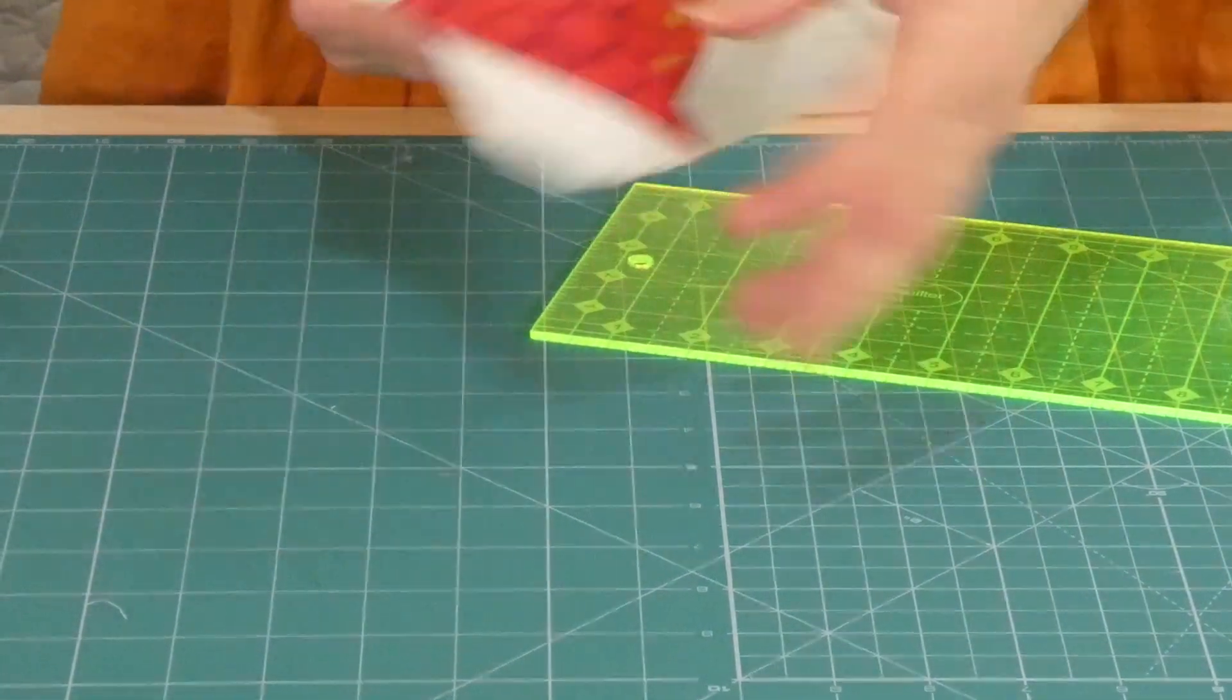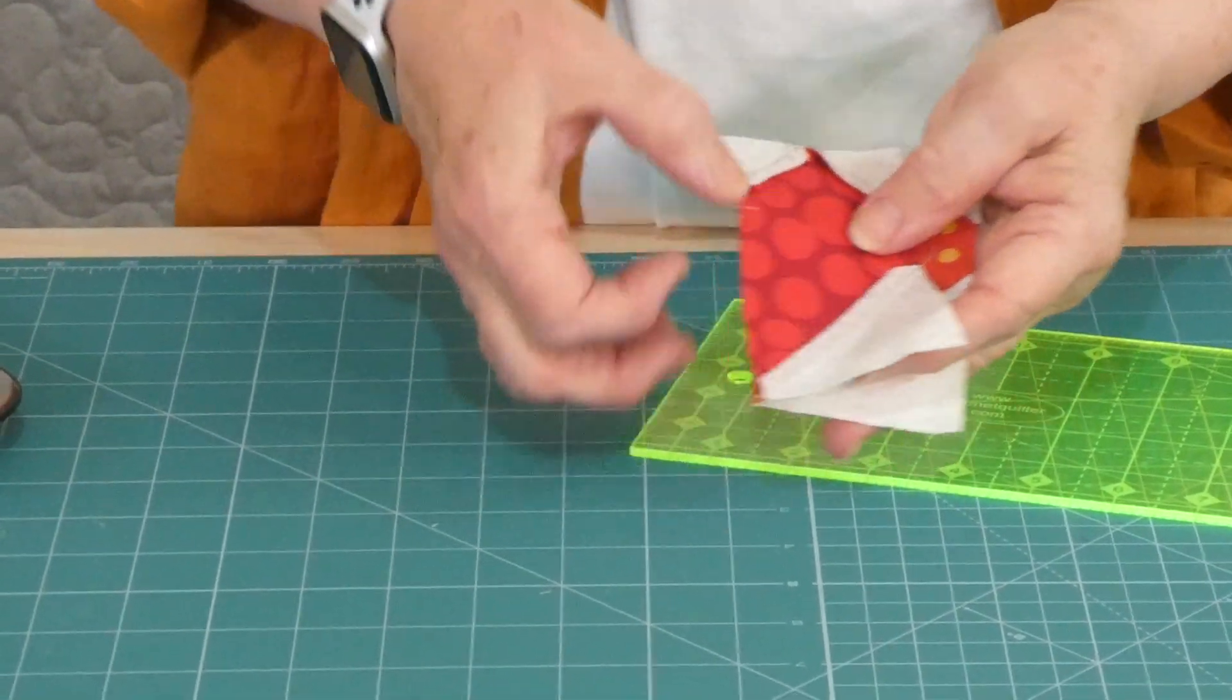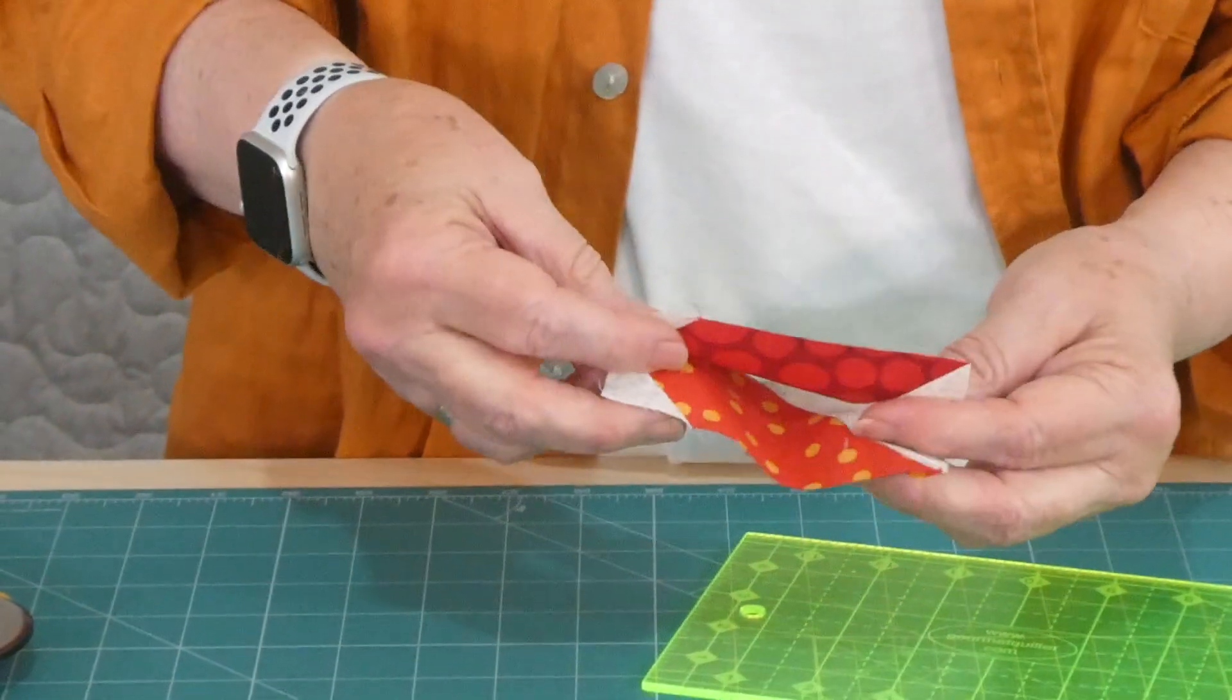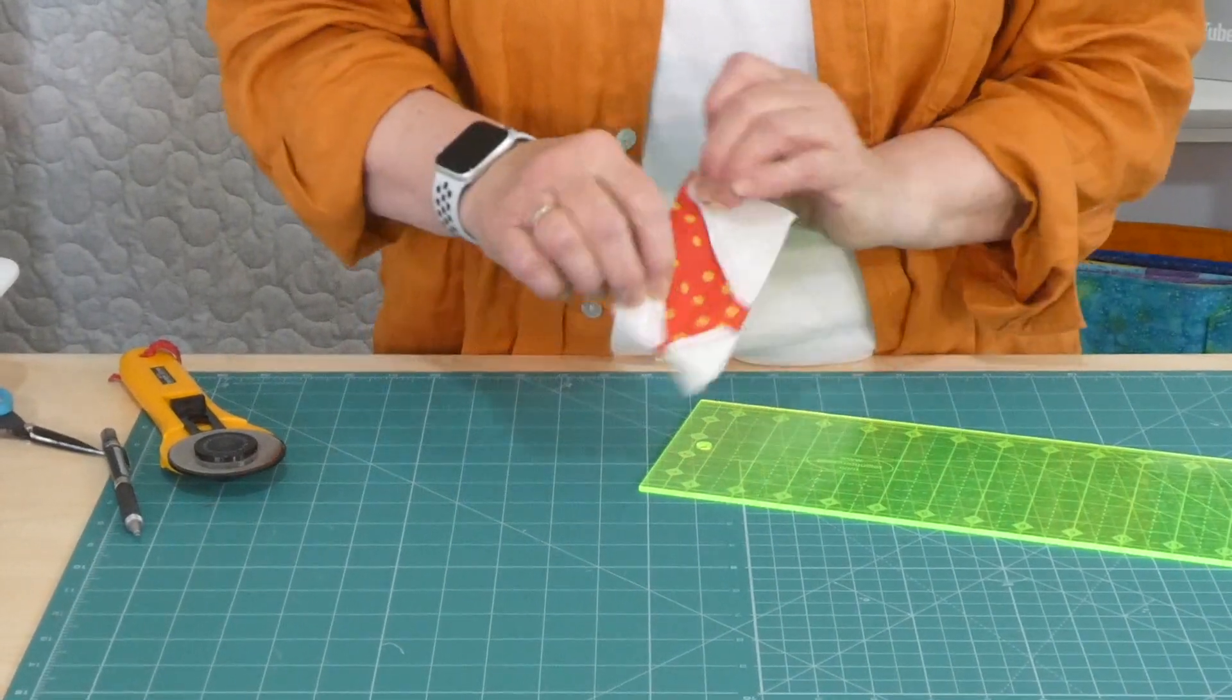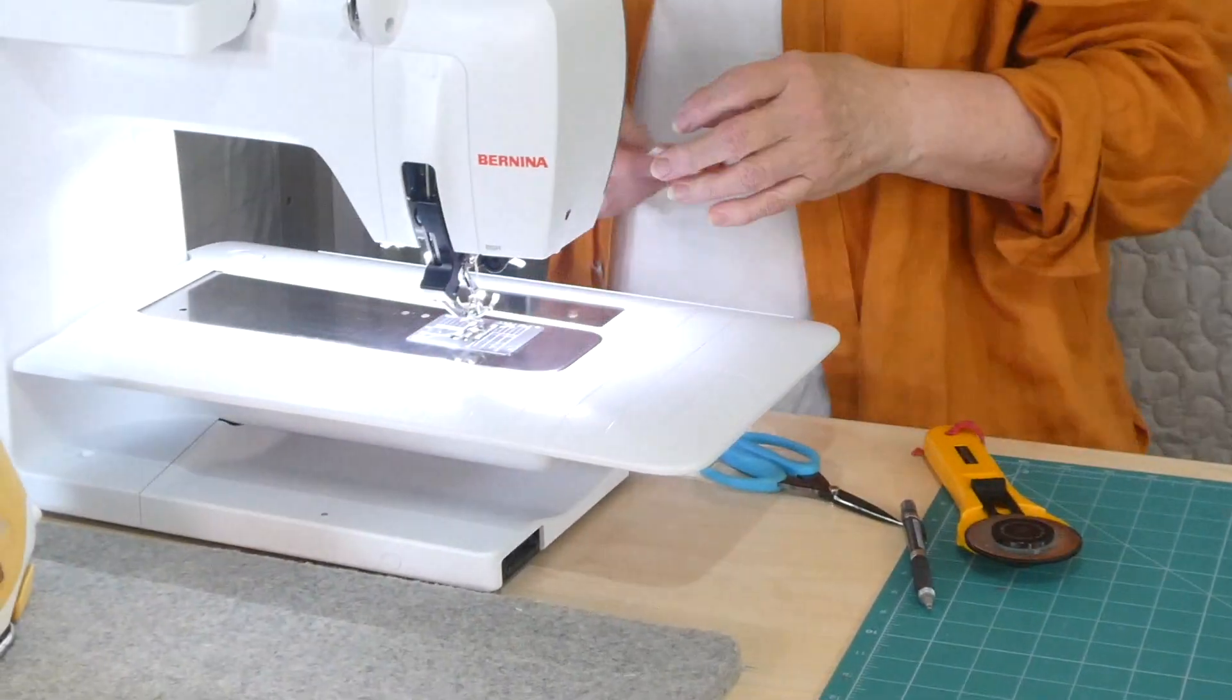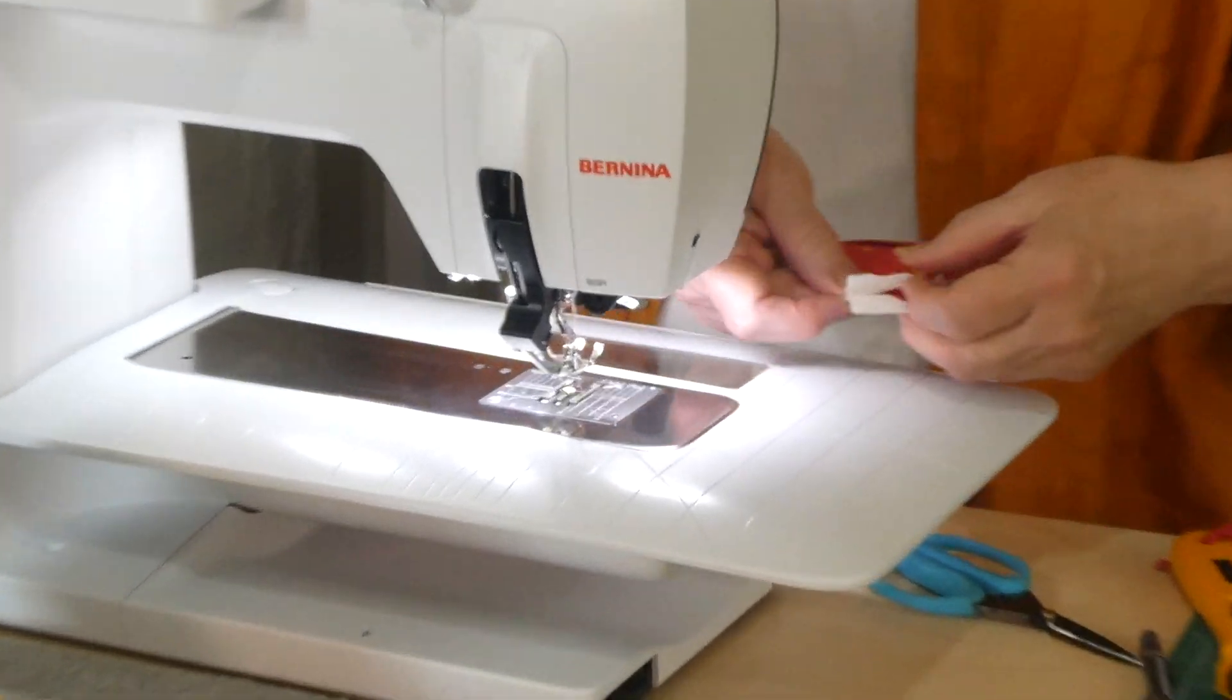And so now we just want to join those together. Because we've pressed all the seams in towards the color, that does mean that they're going to be sitting over each other there. But it hasn't been a problem when I've joined the hearts up. So I'm going to stay with that rather than having them going in opposite directions.